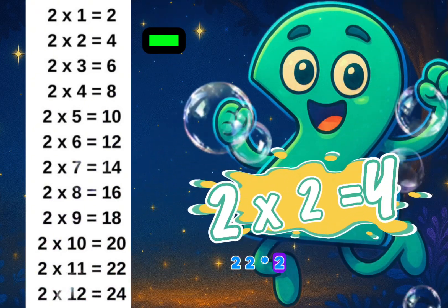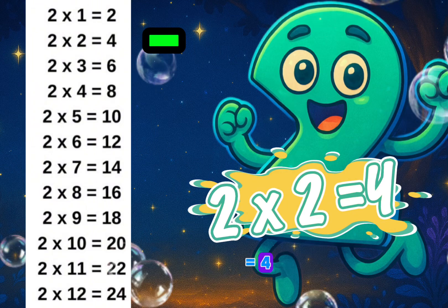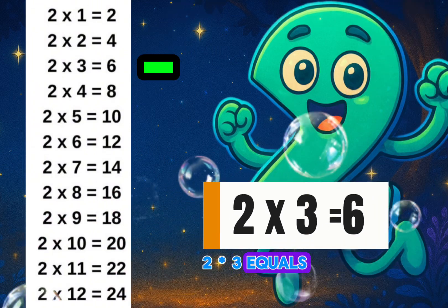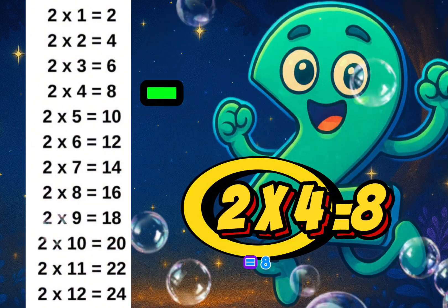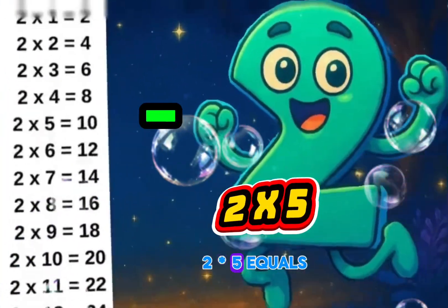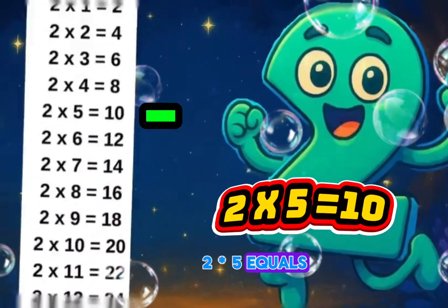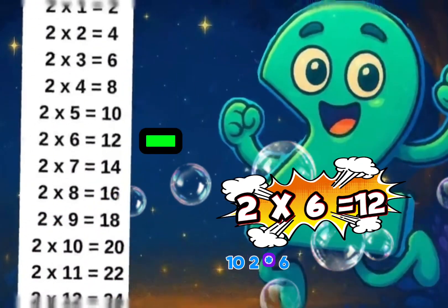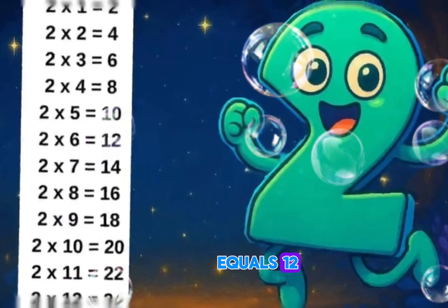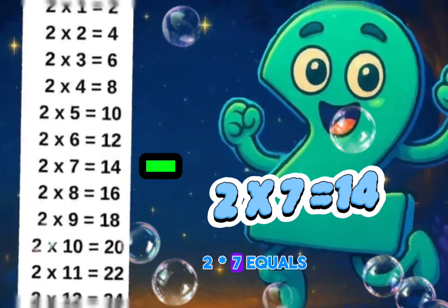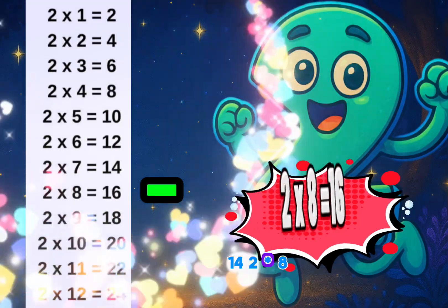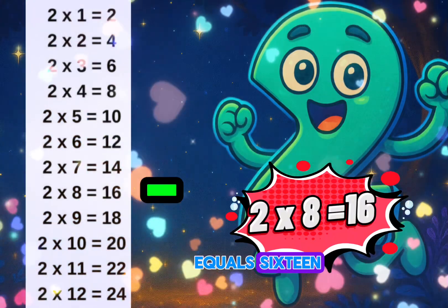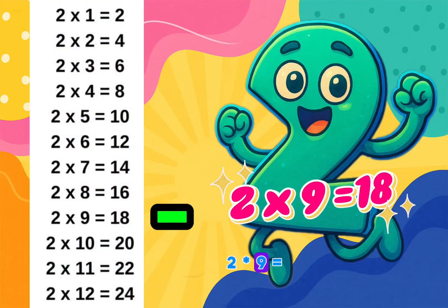2 times 2 equals 4. 2 times 3 equals 6. 2 times 4 equals 8. 2 times 5 equals 10. 2 times 6 equals 12. 2 times 7 equals 14. 2 times 8 equals 16. Nice. 2 times 9 equals 18.